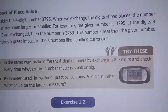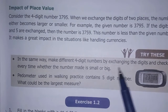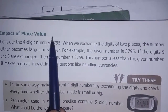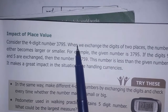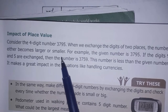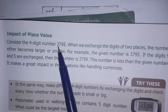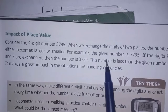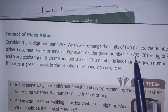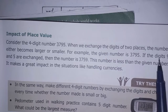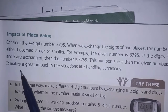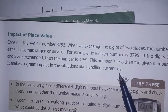Page number 13 — try this. Make different 4-digit numbers by exchanging the digits and check every time whether the number made is smaller or bigger. Impact of place value: consider the 4-digit number 3795. When we exchange the digits of two places, the number either becomes larger or smaller. For example, if digits 9 and 5 are exchanged, the number becomes 3759, which is less than the original number 3795. This makes a great impact in situations like handling currencies.